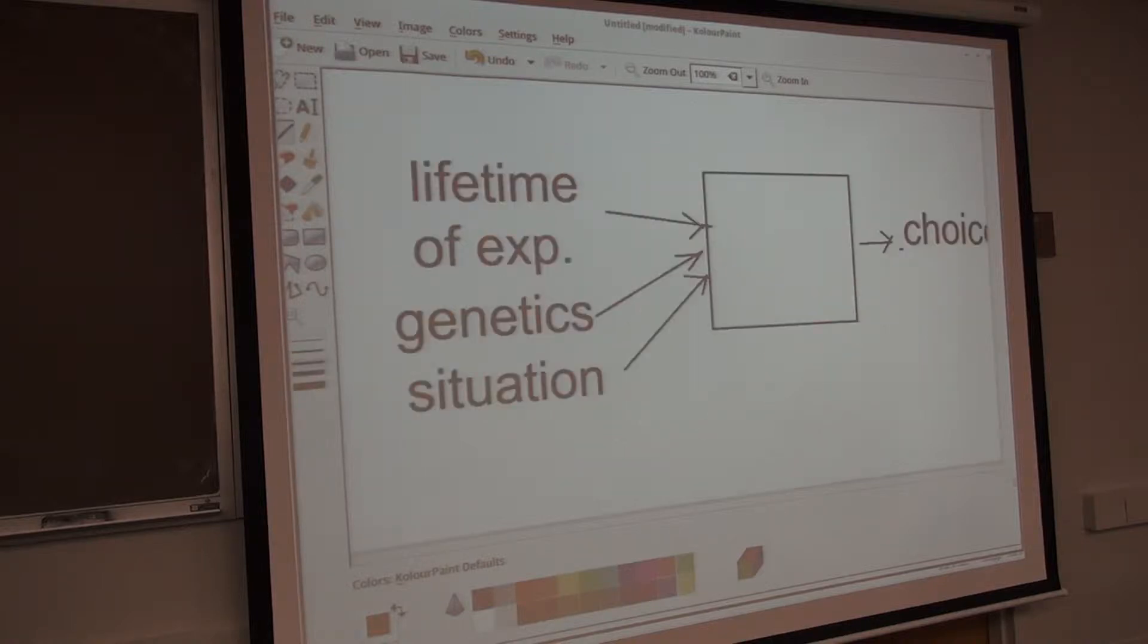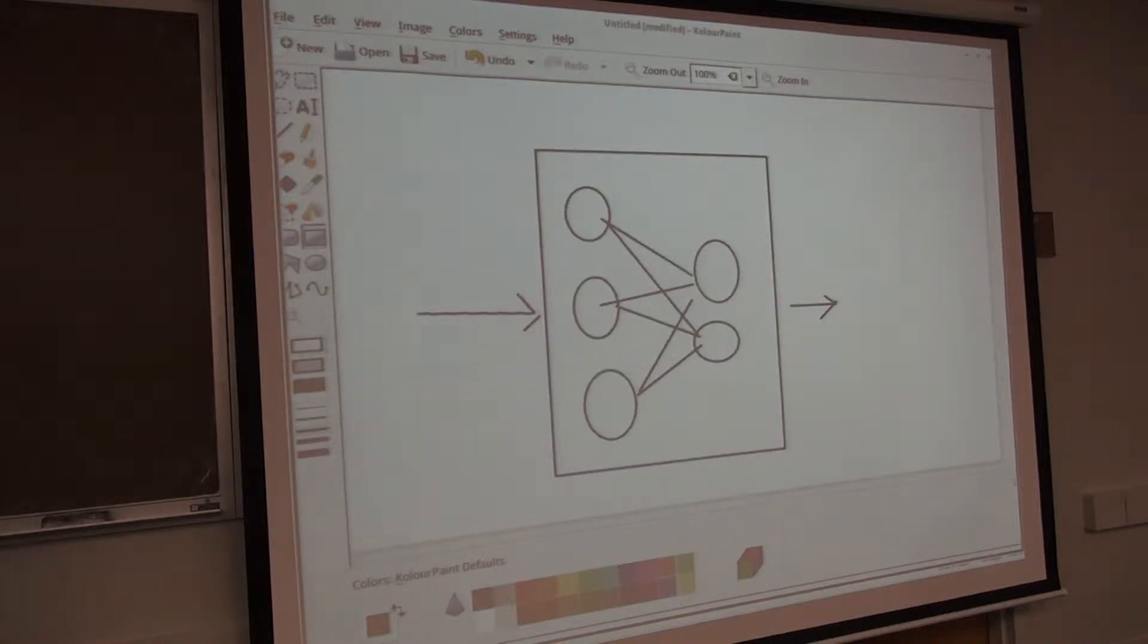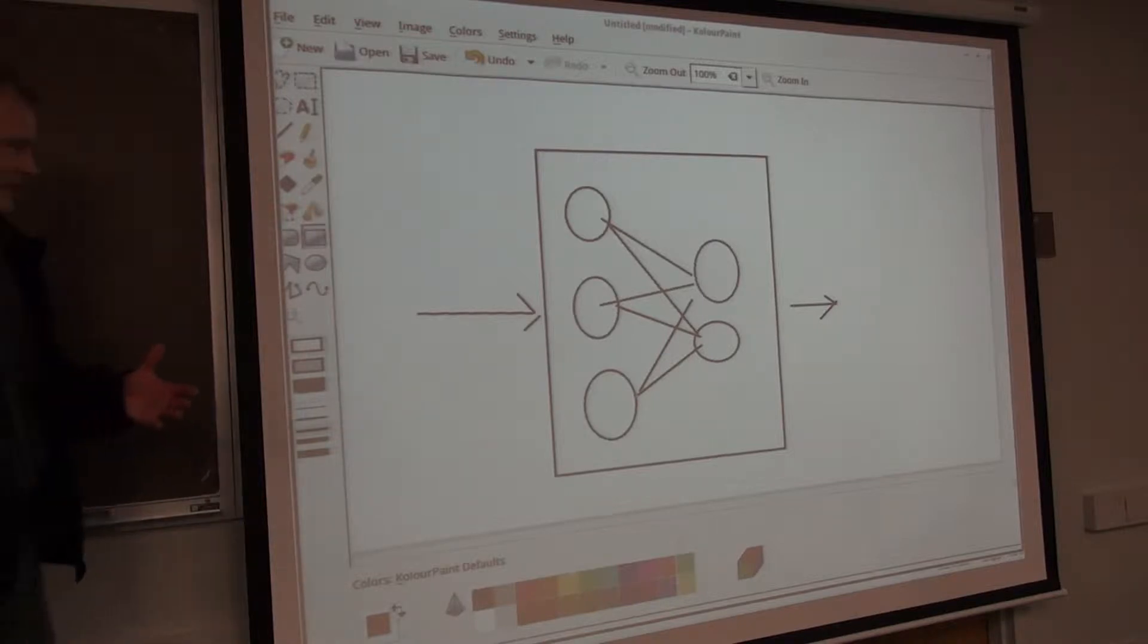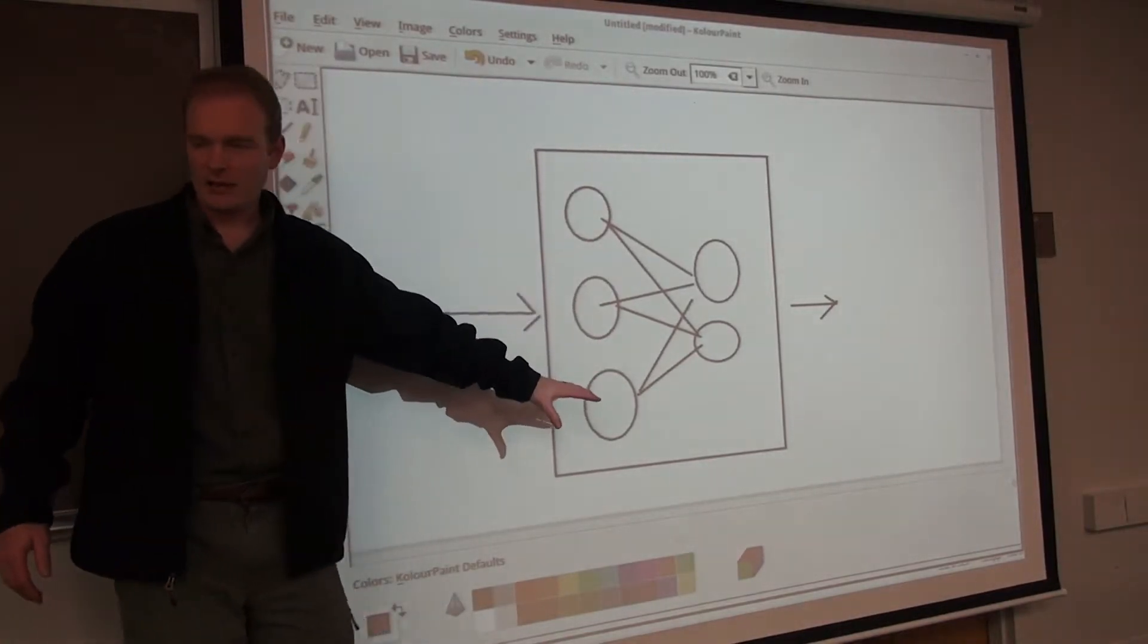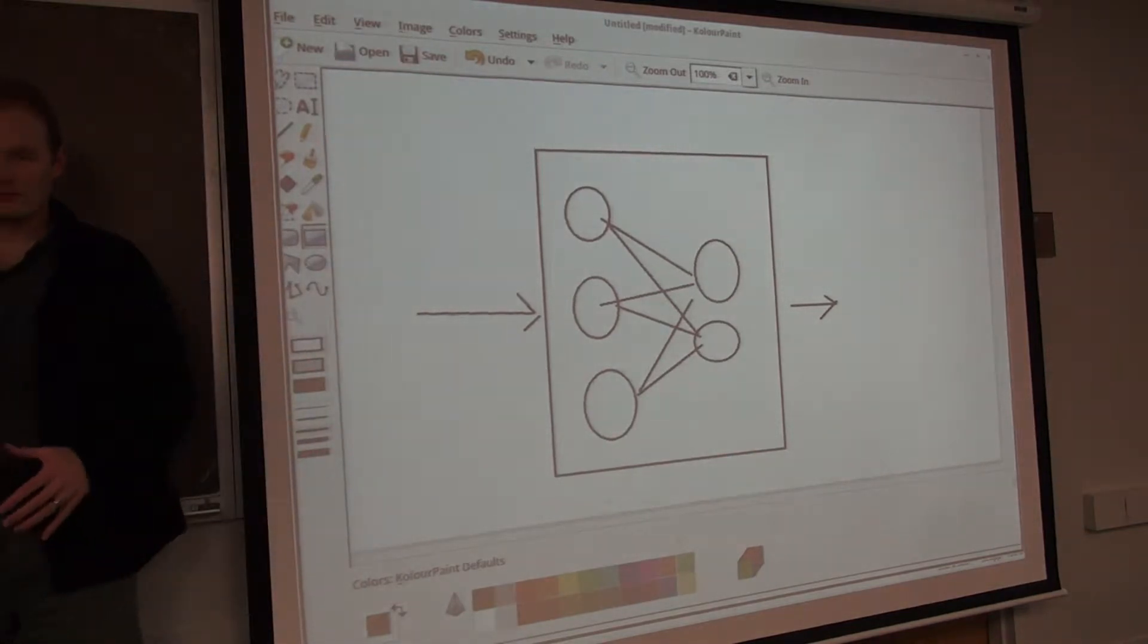Let me tie this back to artificial neural networks. It turns out the dumbest thing you can do is have a hidden unit for every single data point in your data.